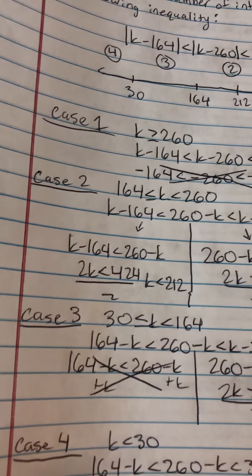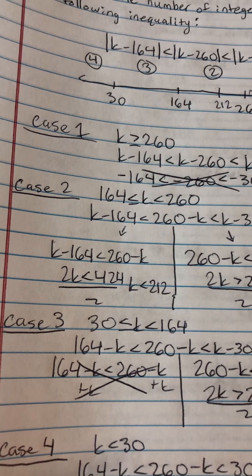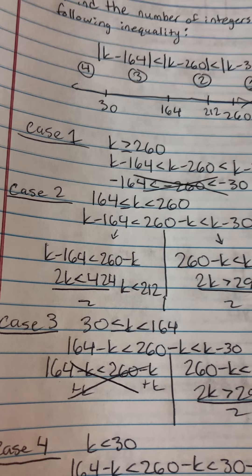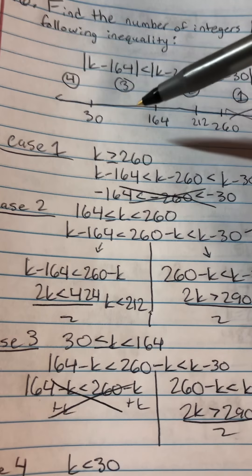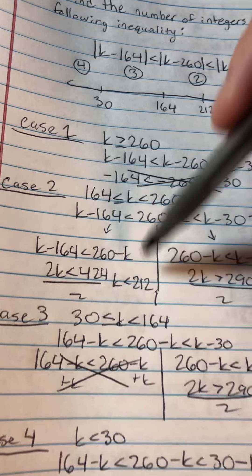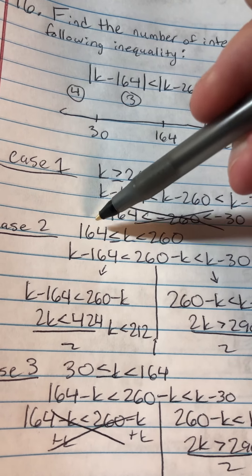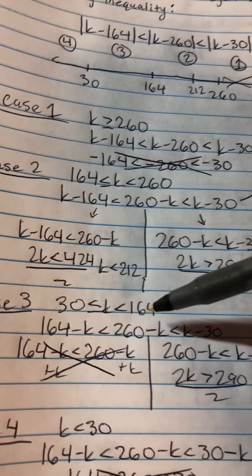So case 3 is when k is greater than or equal to 30, but is less than 164. I wouldn't make it less than or equal to because I already did greater than or equal to 164. So it just has to be less than for this.